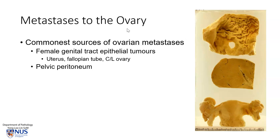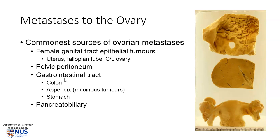Let's talk a little bit about metastasis to the ovary. The commonest sources are usually within the female genital tract itself — malignant epithelial tumors, particularly in the uterus such as endometrial adenocarcinoma, fallopian tube tumors, as well as tumors of the contralateral ovary. The pelvic peritoneum is also a source. Outside of the female genital tract, it is not uncommon to have gastrointestinal tract tumors such as colonic adenocarcinoma, appendiceal tumors which may be mucinous in nature. These tumors may actually produce huge amounts of extracellular mucin and may result in pseudomyxoma peritonei, as well as metastasis in the ovaries.